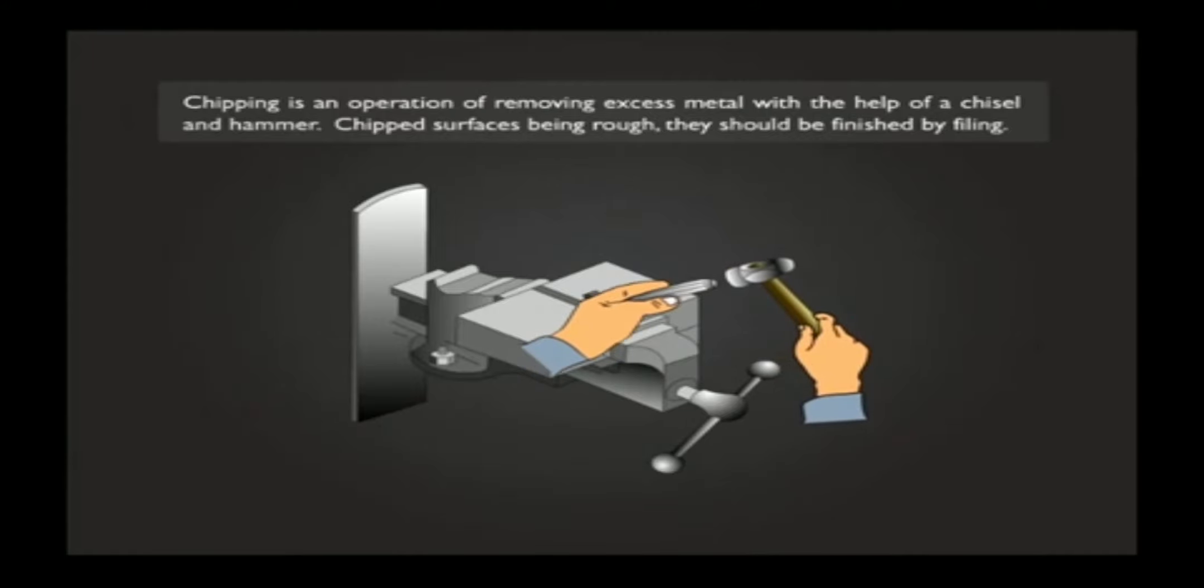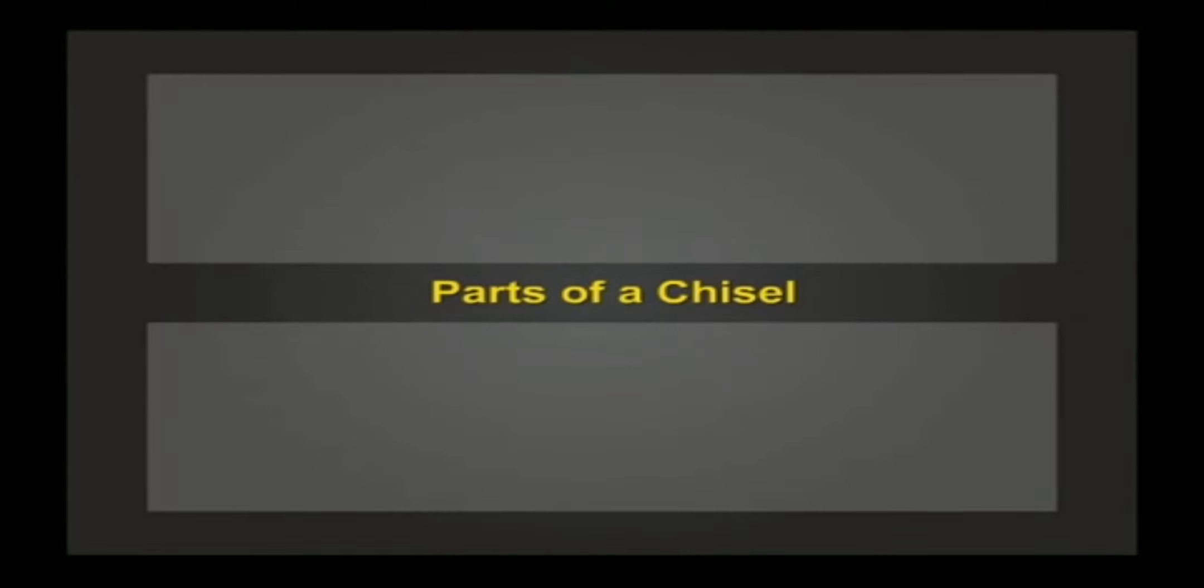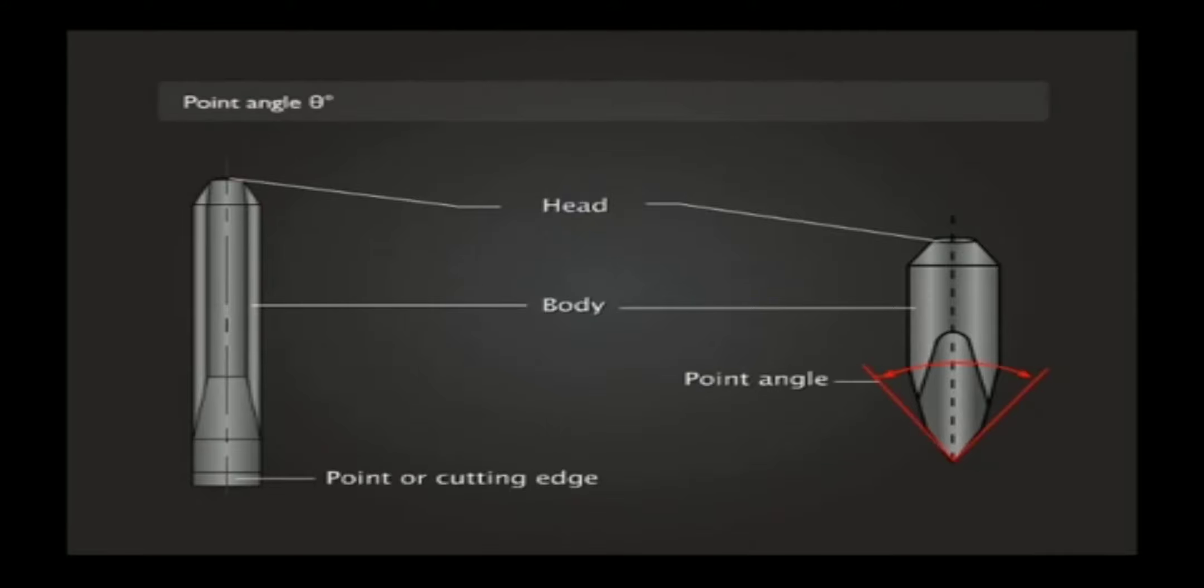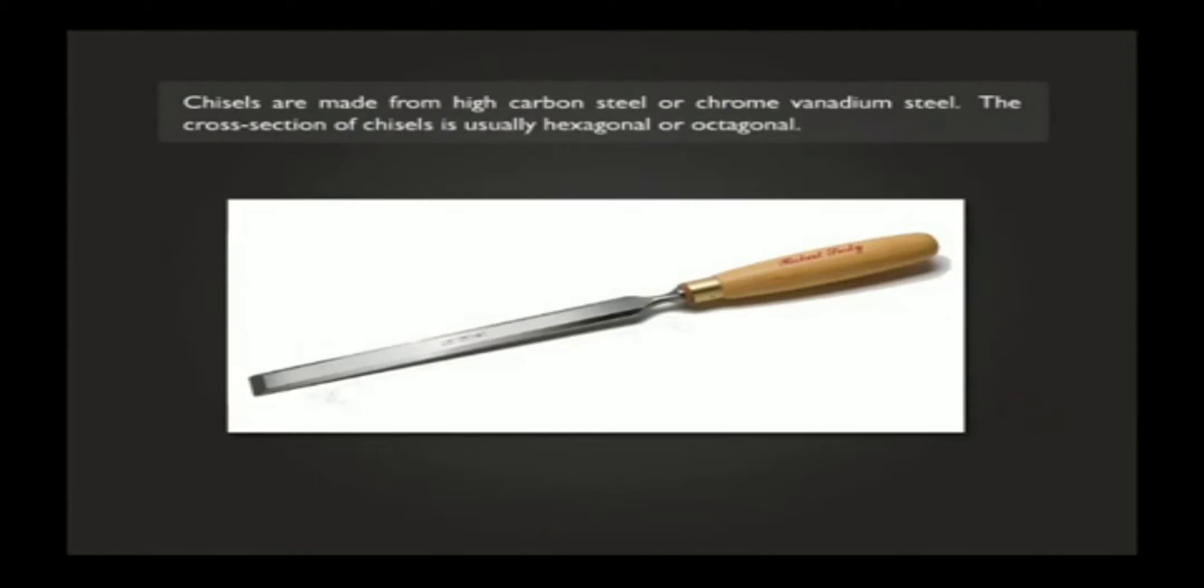A chisel has the following parts: head, body, and point or cutting edge with point angle theta degrees. Chisels are made from high carbon steel or chrome vanadium steel.